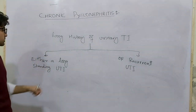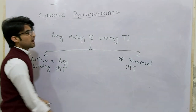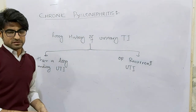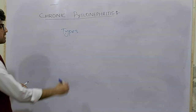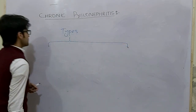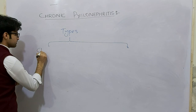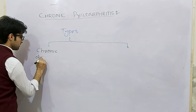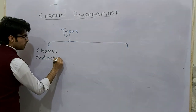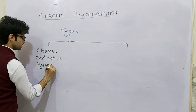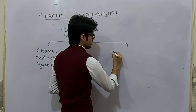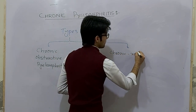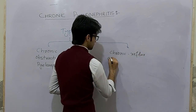Now we will move to the types of chronic pyelonephritis. Chronic pyelonephritis is divided into two types: the first is chronic obstructive pyelonephritis, and the second is chronic reflux-associated pyelonephritis.